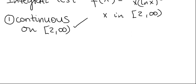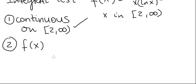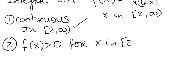Next we must check that this function is positive. Since everything in this function is positive when x is greater than or equal to 2 — the numerator is 1, always positive, and the denominator is clearly positive — dividing two positive numbers yields a positive number. Therefore f of x is positive for any x in the interval 2 to infinity.